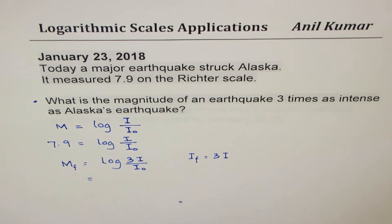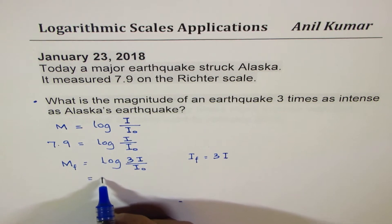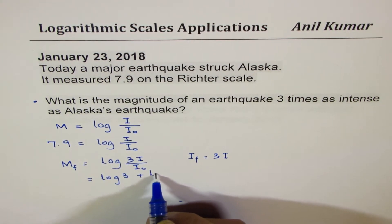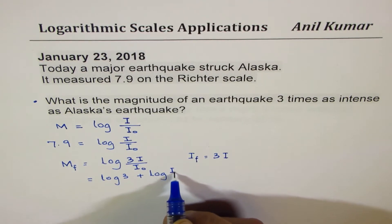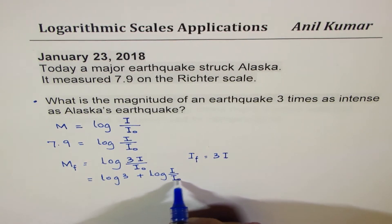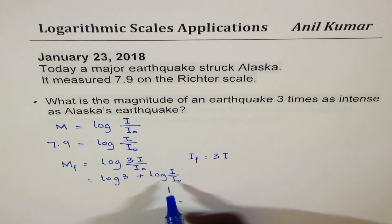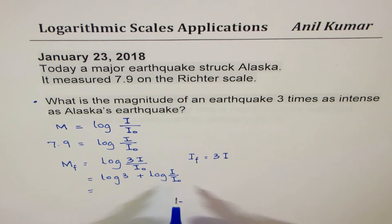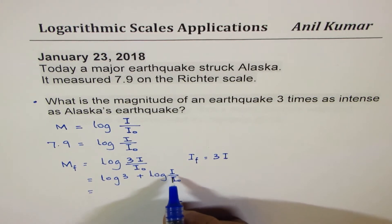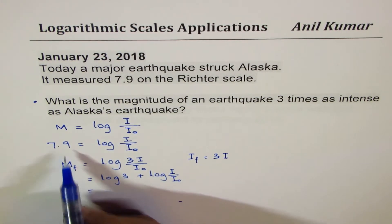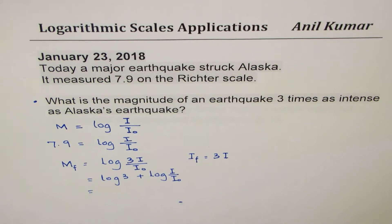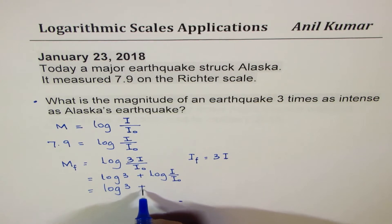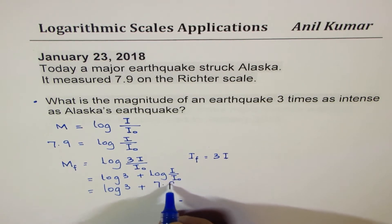Applying logarithmic rules, I can write this as log of 3 plus log of I over I₀. We can use the calculator to find log of 3 and then add log of I over I₀, which is 7.9. So we write this as log of 3 plus 7.9.